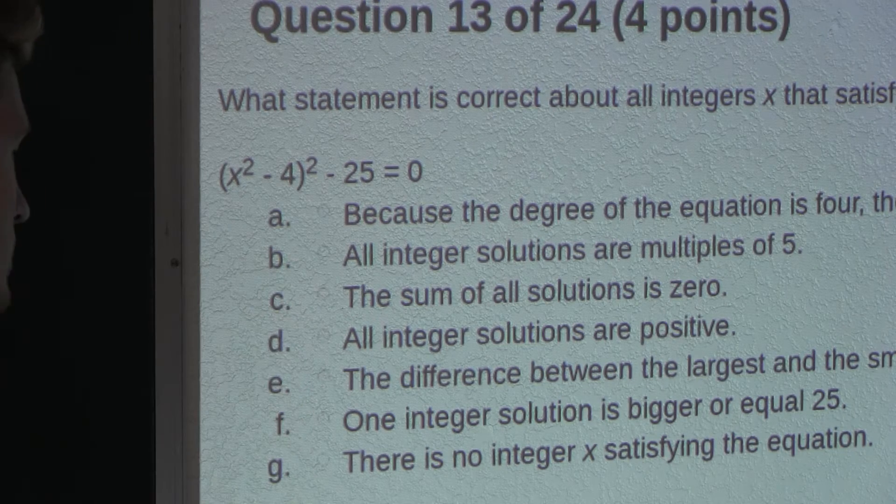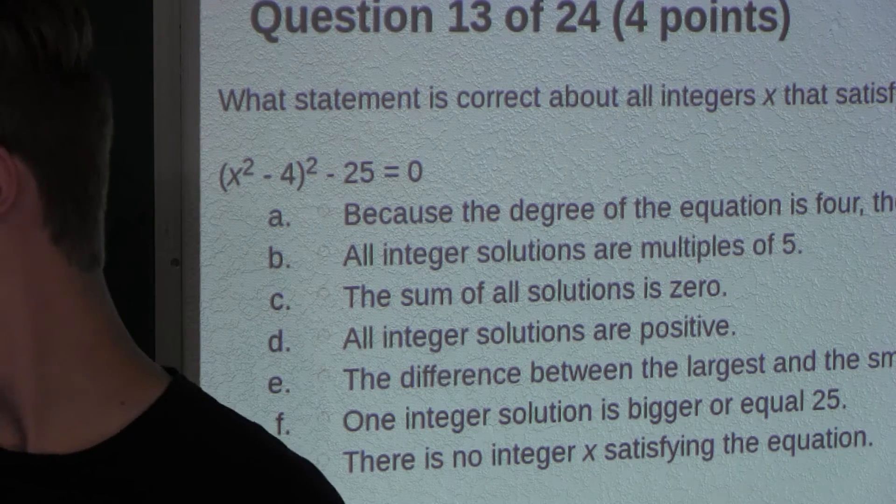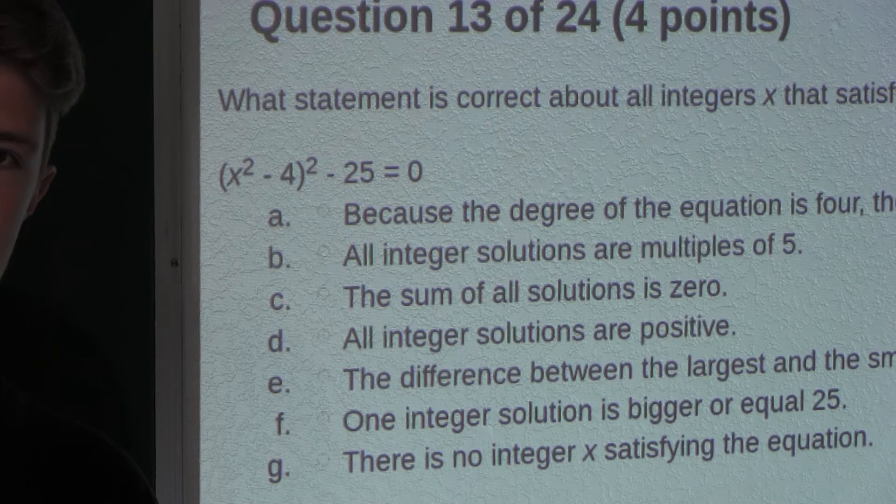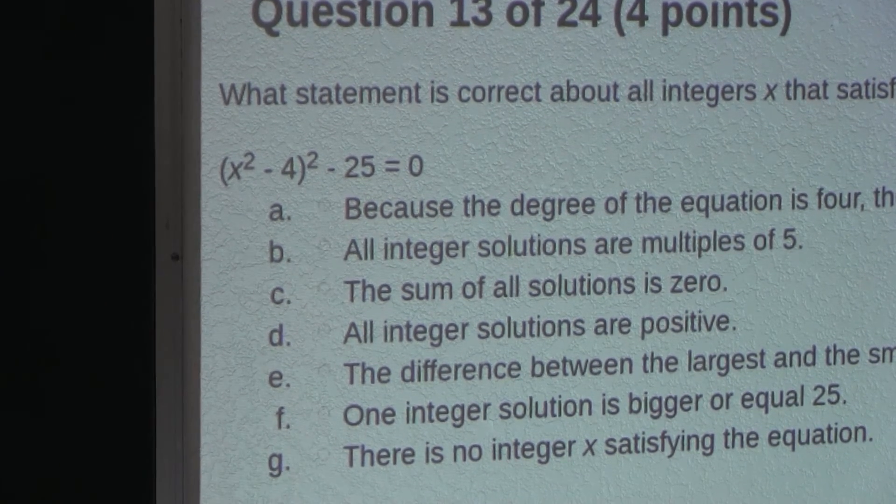Now, we also know that because our two solutions are negative 3 and 3, and negative 3 plus 3 is equal to 0.